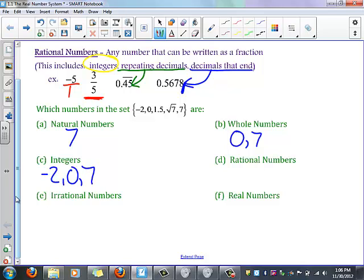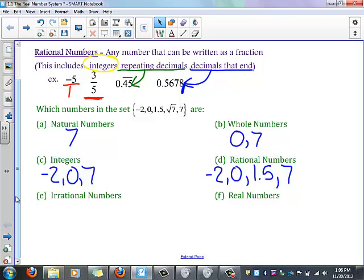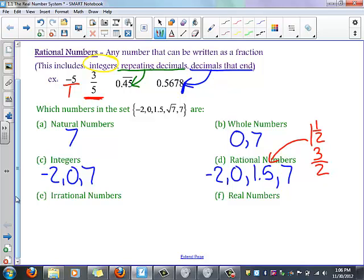Rational numbers are what we had just above, so this is going to be everything except that root 7. Notice with 1.5 in particular, this 1.5 can be written as 1 and a half, which is 3 halves, so you can write that as a fraction.